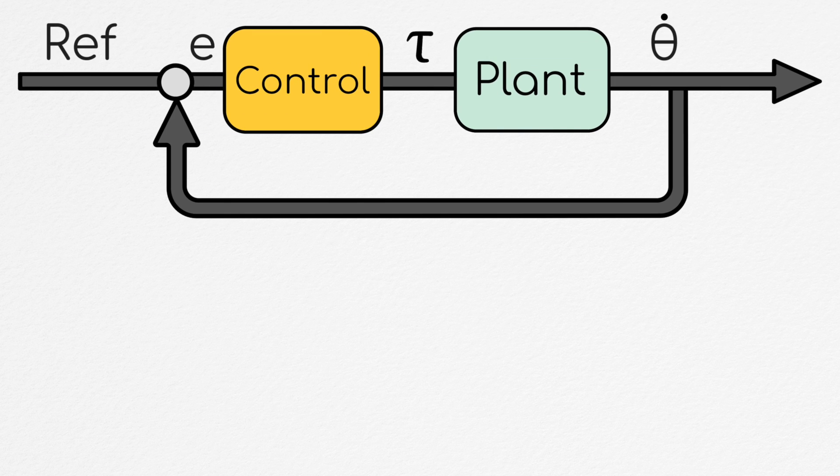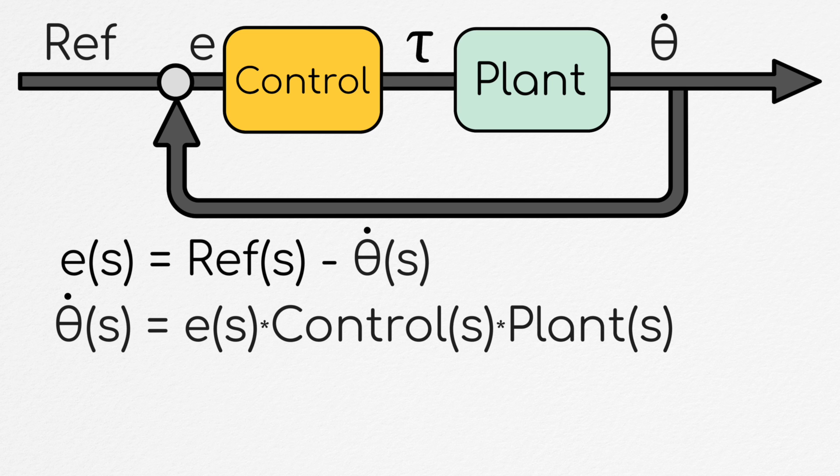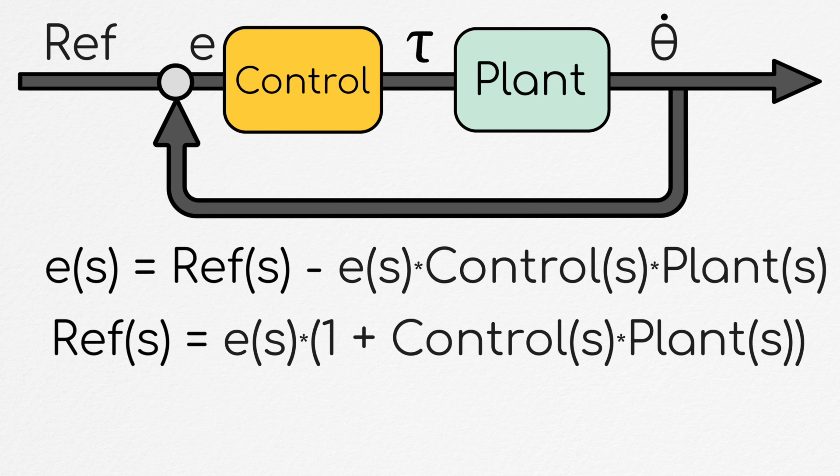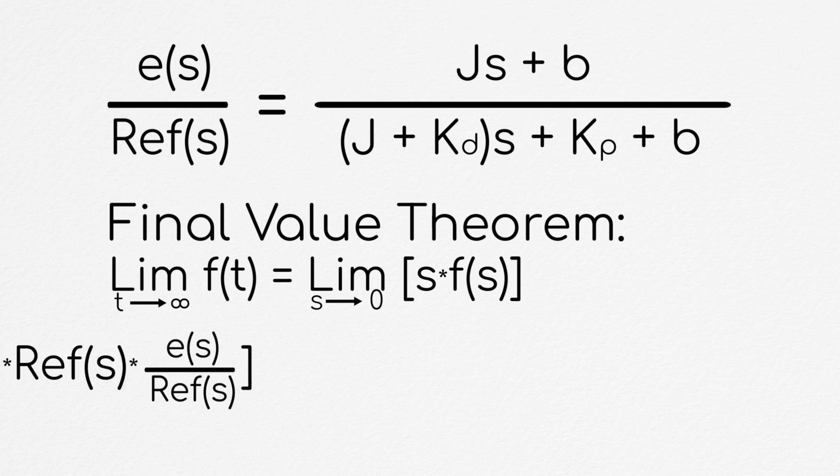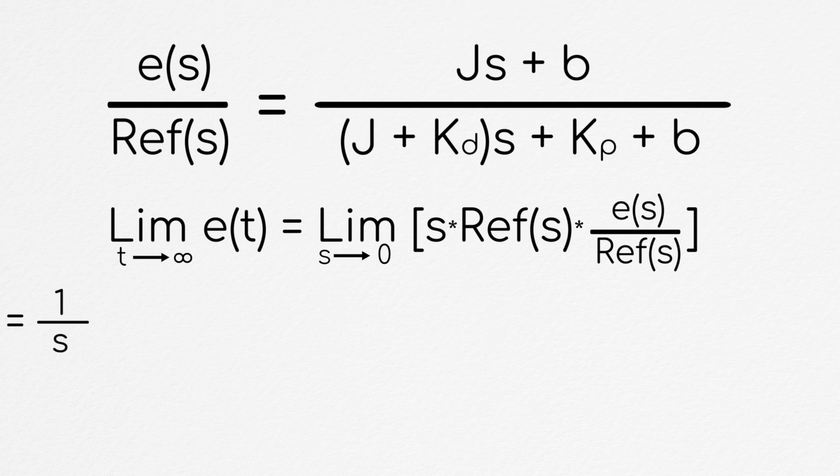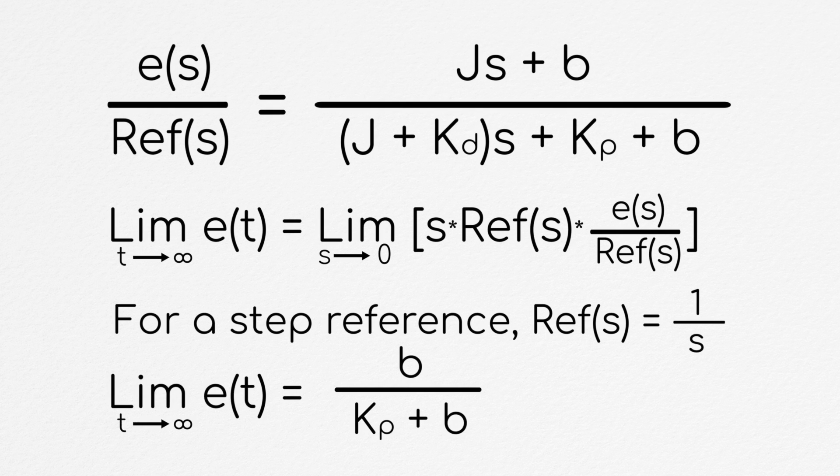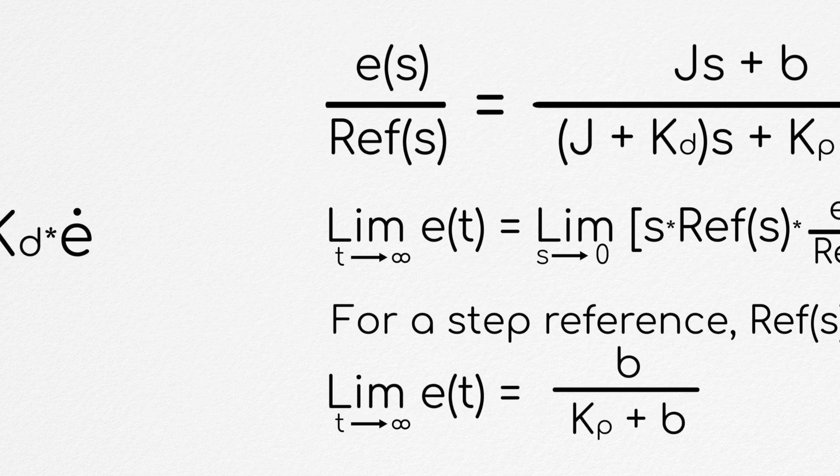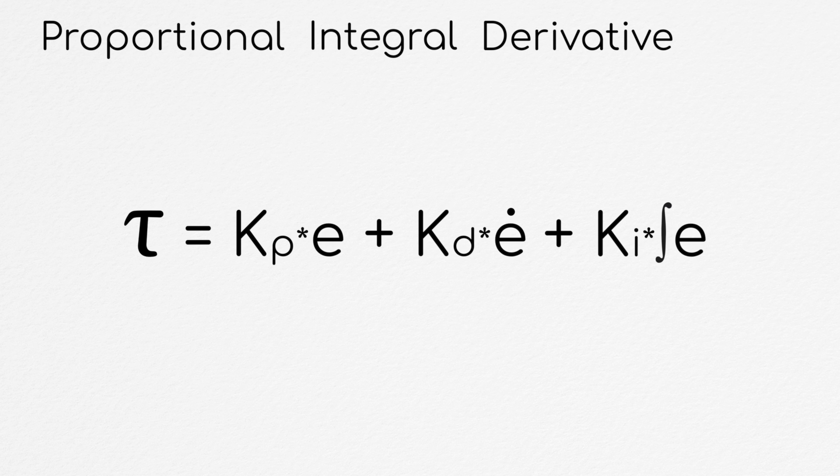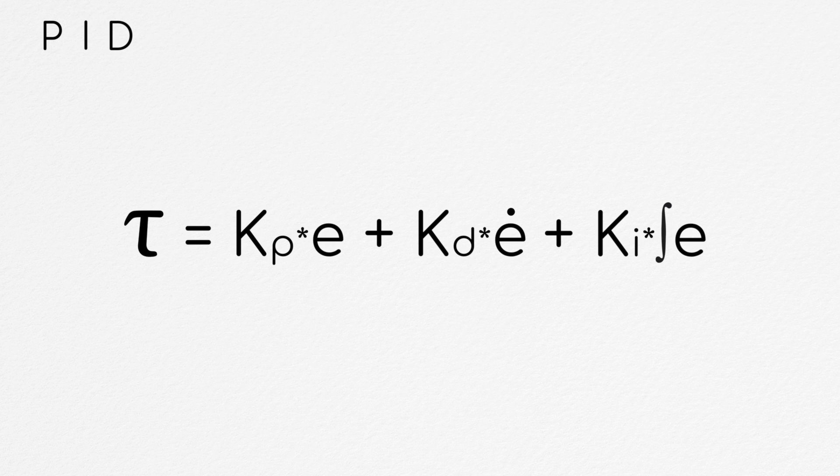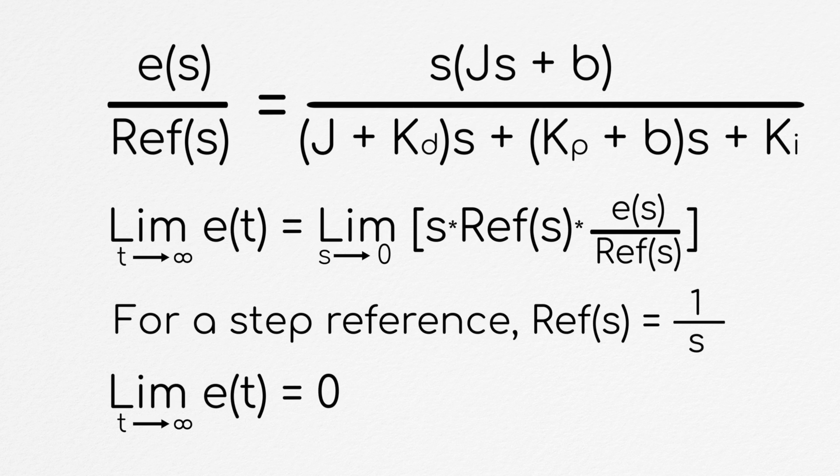First of all, if we do some algebra to solve for the error when using PD control to track velocity, we can see via the final value theorem that for an input step response in our reference, we'll have a steady-state error in our velocity tracking. To fix this, we could add an integral term to our controller, thus making this a proportional integral derivative controller. Looking at our final value theorem, this fixes the steady-state tracking error.